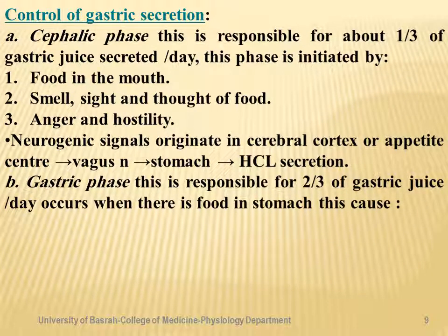Gastric secretion is controlled through three phases. The first is the cephalic phase, responsible for regulating about one-third of gastric juice secreted per day. The cephalic phase is triggered by higher center stimulation — for example, the smell, sight, and thought of favorite food stimulate secretion of gastric juice.